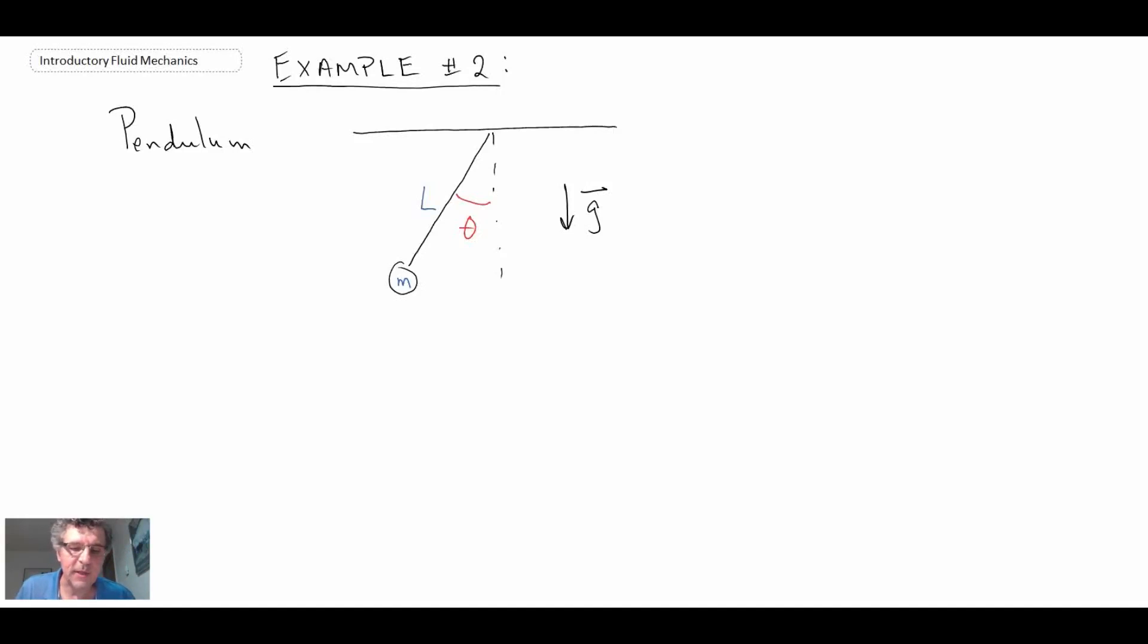So here's a schematic of a pendulum. The mass of the bob is weight or mass m. The length of the pendulum is L and it is at an angle theta with respect to the vertical and the gravity vector is g. And so what we're asked to do is to write an expression for the period of the swing using Buckingham Pi analysis. And here the period of the swing would be the time for a full cycle and it is given capital T.